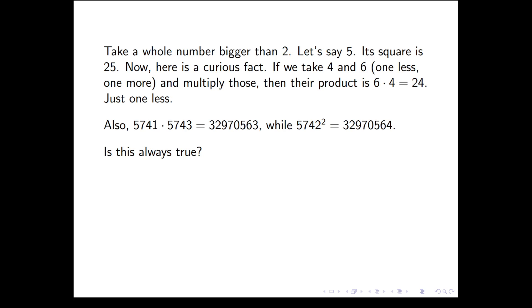Take a whole number bigger than 2, let's say 5. If we square 5, we get 25. Now here's a curious fact: if we take 4, which is one less, and 6, which is one more than 5, and multiply those numbers together, we get 24, which is just one less than the square.